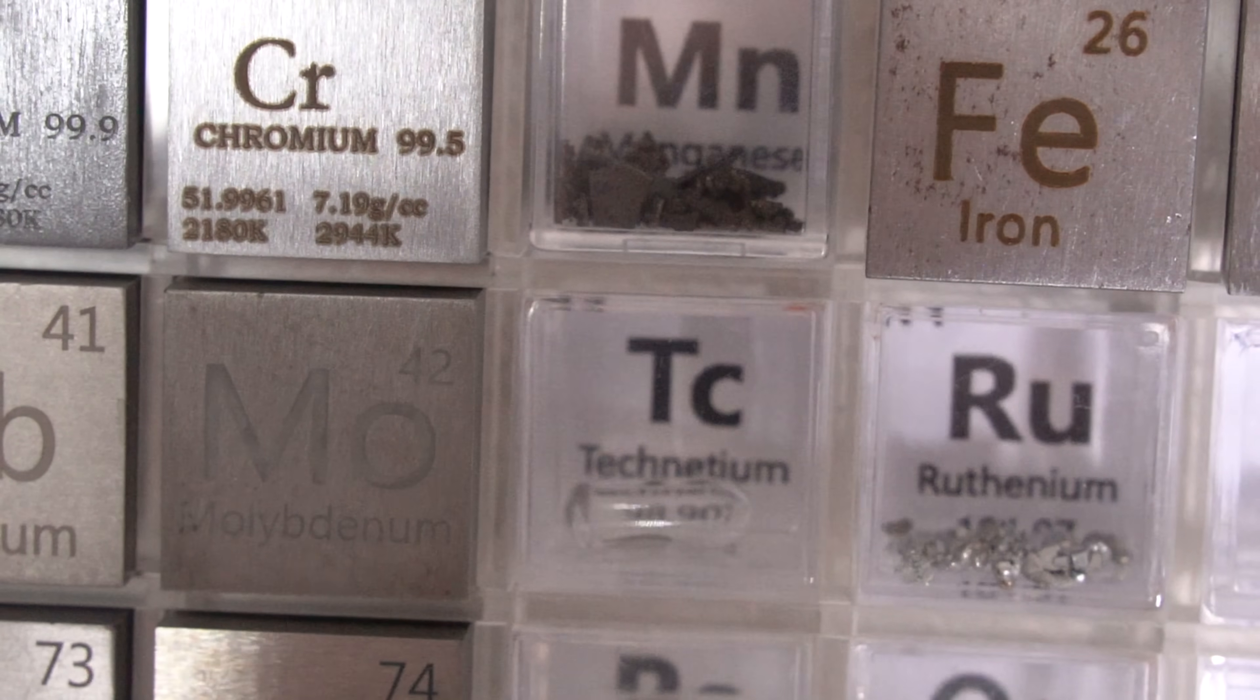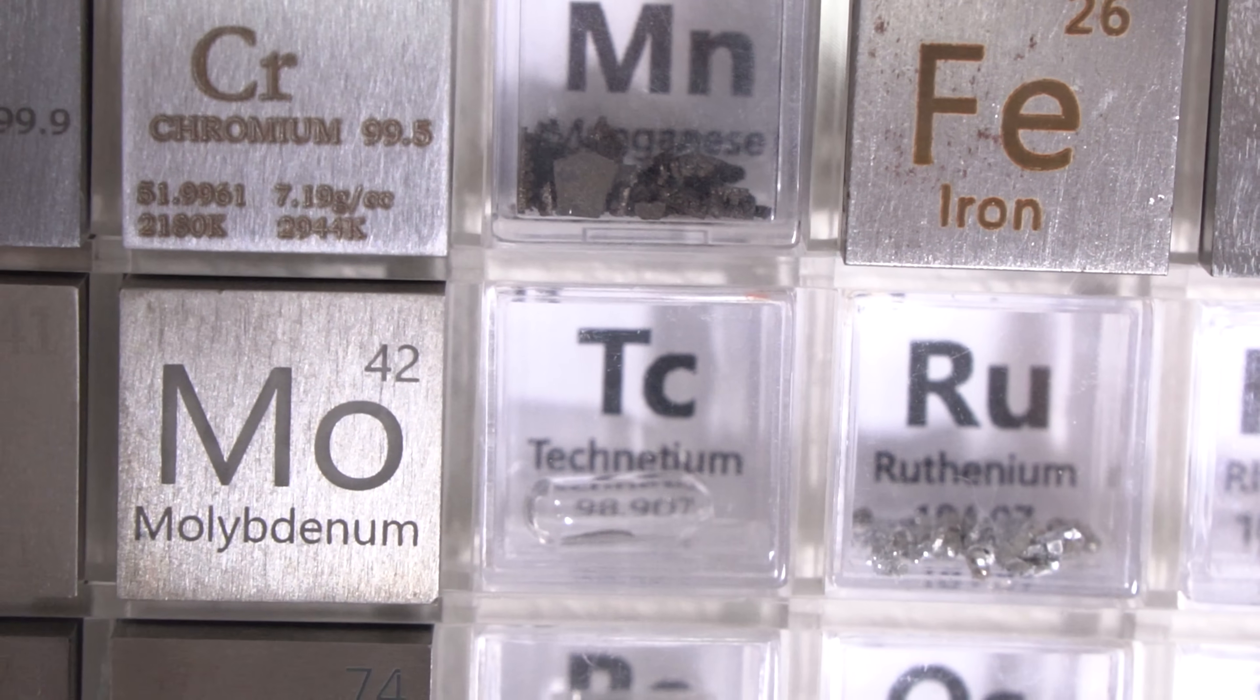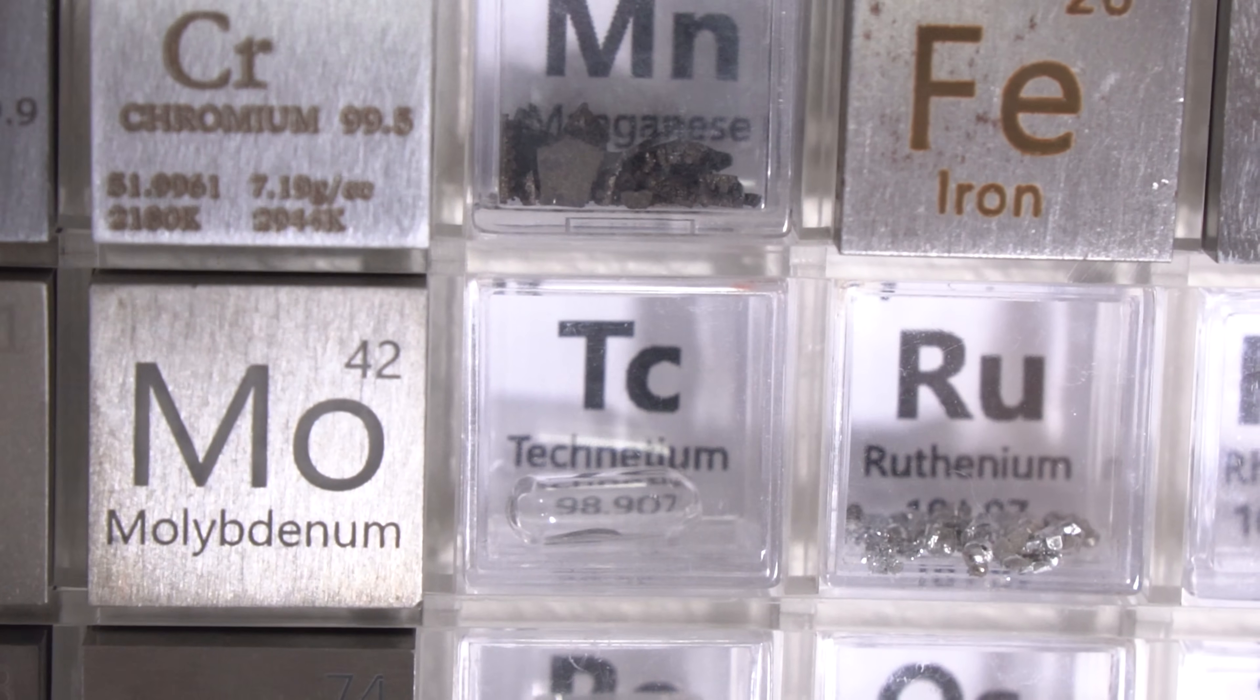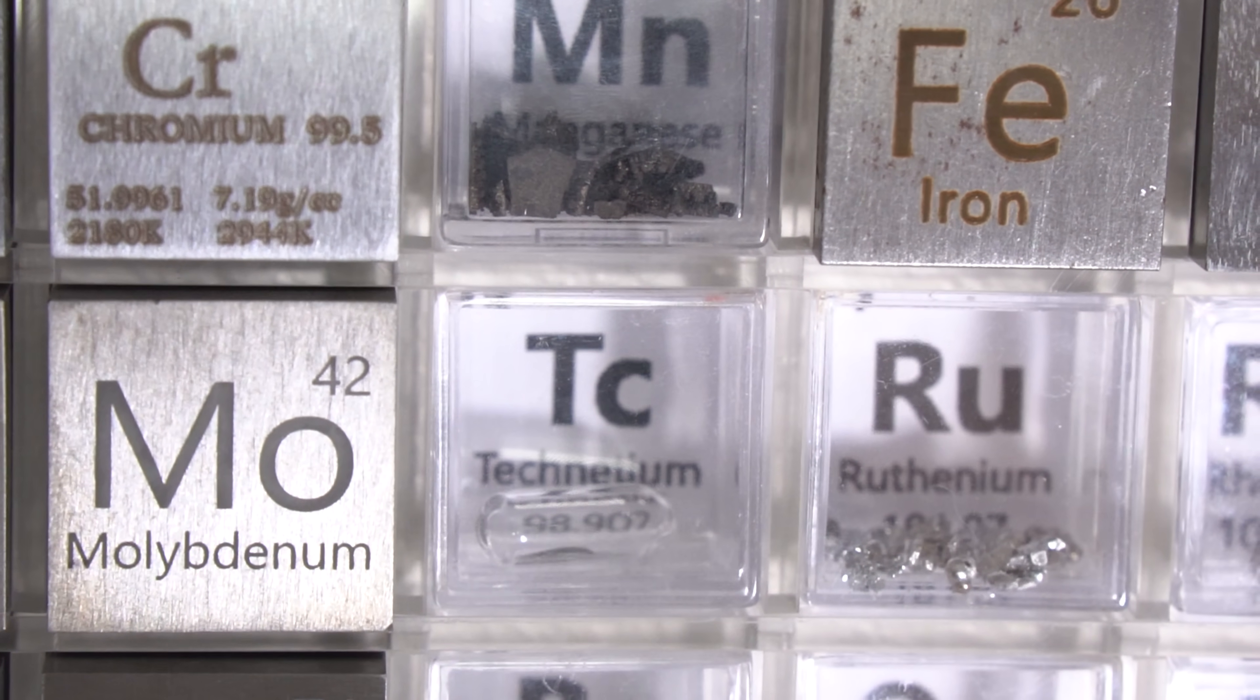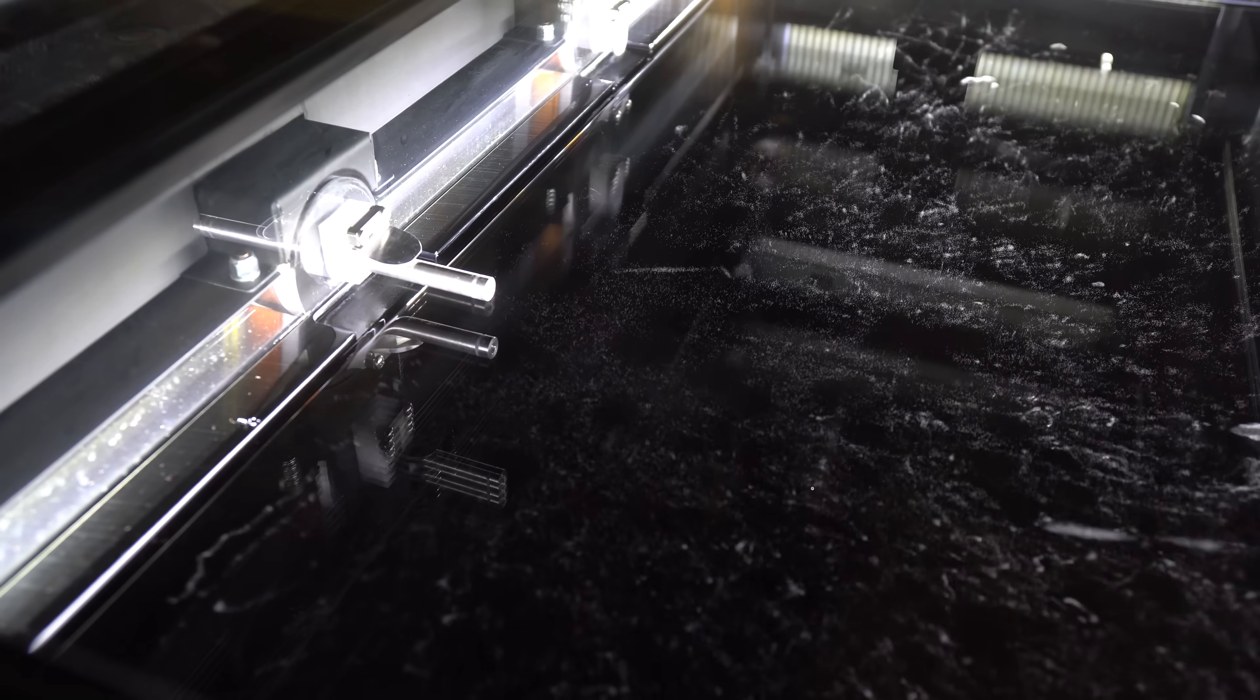Thus, technetium became the first artificial metal which people managed to synthesize, because up until then naturally occurring technetium was never found. That's because this element is radioactive, which means it doesn't have stable isotopes, which is why it gradually breaks down into more stable elements and simply disappears.